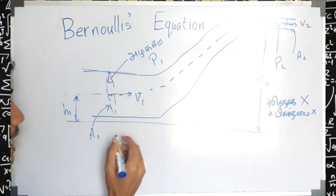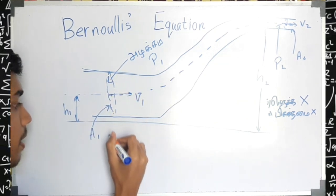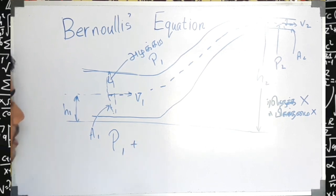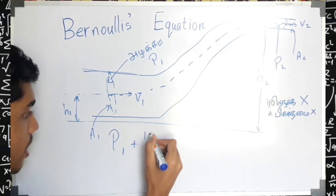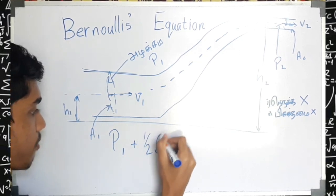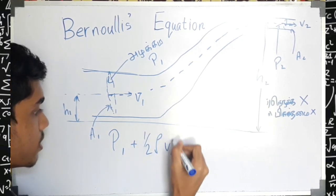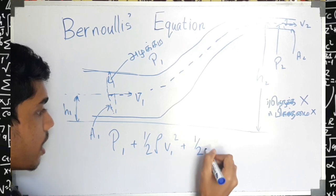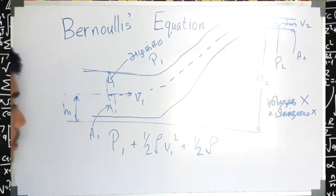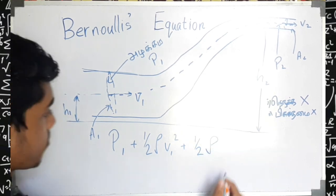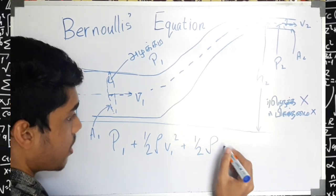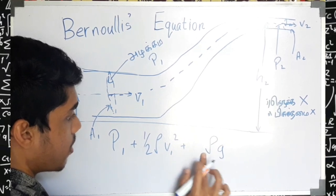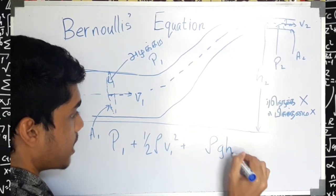P1 plus half rho V1 squared plus rho g h1.